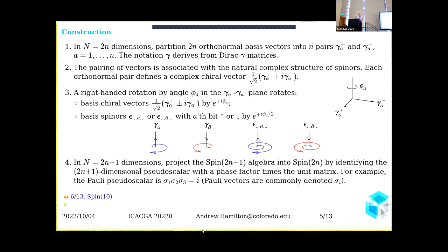If you are in odd dimensions instead of even dimensions, the standard thing one does is project the odd spin algebra into one dimension lower by identifying the odd dimensional pseudoscalar with a phase factor times the unit matrix. For example, the Pauli pseudoscalar—we routinely call the Pauli vector sigmas—their product is set equal to the imaginary times the unit matrix.